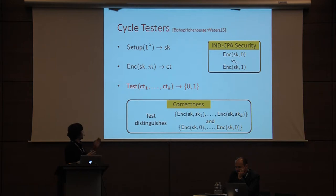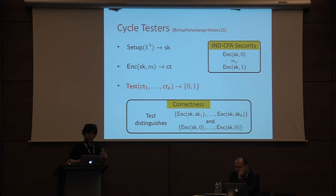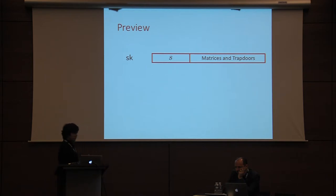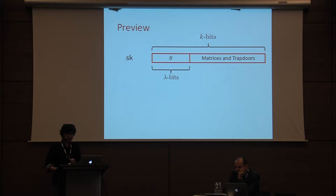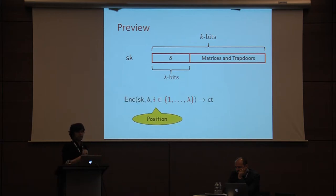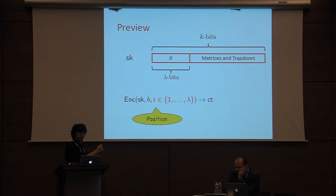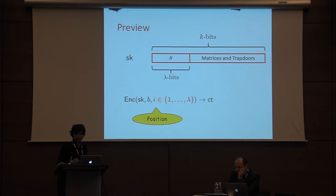We'll now build cycle testers from LWE using lattice trapdoors. Let me give a brief preview of the scheme. The secret key will contain a lambda-bit string s, as well as a bunch of matrices and trapdoors. The encryption algorithm takes as input a secret key, a bit to encrypt, and also a position from one through lambda. You can imagine that this position will help in constructing the test algorithm.